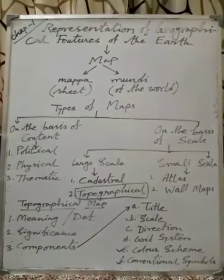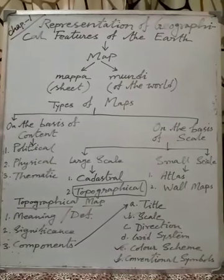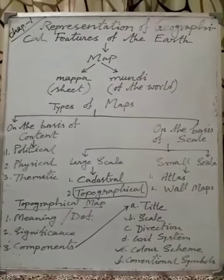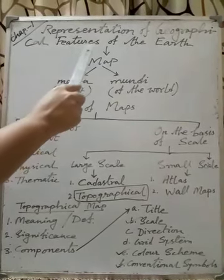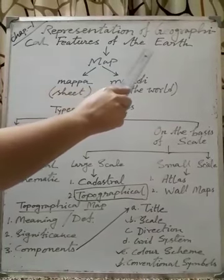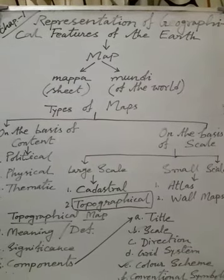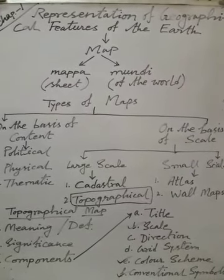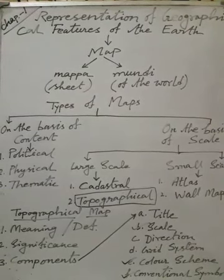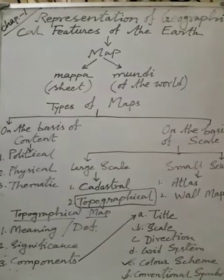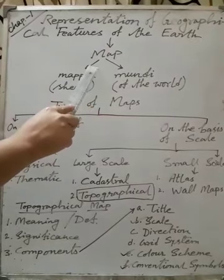Good morning students, today I am going to teach you geography. I will start from our first chapter — Chapter 1: Representation of Geographical Features of the Earth. We can represent everything — man-made features, physical features, or natural features of our earth on a flat paper, and that paper is called a map.